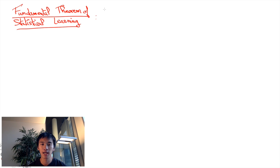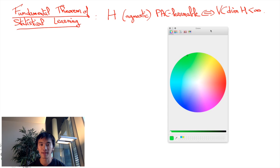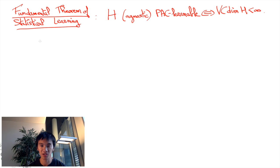A hypothesis class is agnostic PAC-learnable if and only if its VC dimension is finite. In fact, I could even add that the sample complexity required to PAC-learn H is linear in the VC dimension of H.